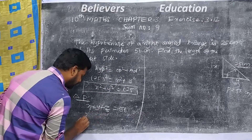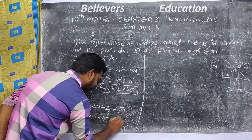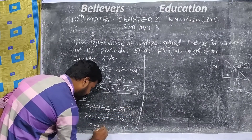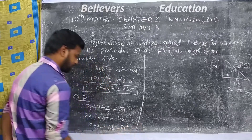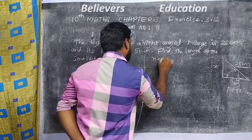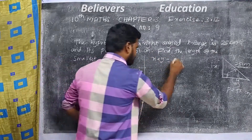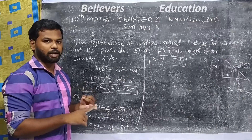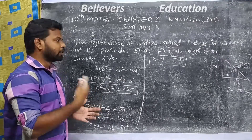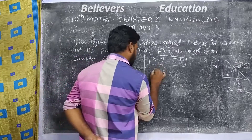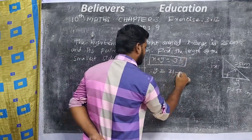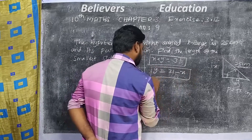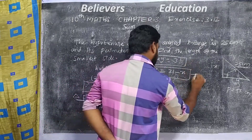For the perimeter, x plus y plus 25 is equal to 66. So x plus y equals 66 minus 25, which gives x plus y equals 41. Therefore, y is equal to 31 minus x. This is our second equation.